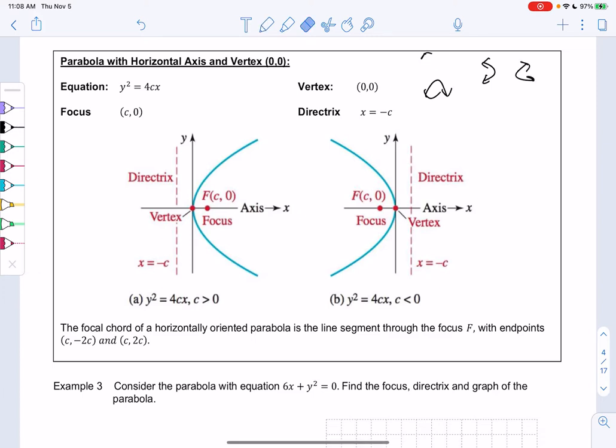So everything is really similar, but x and y kind of swap. So instead of being x squared, we now have y squared. So y² = 4cx. C still makes the focus, but the focus is now on the horizontal axis.